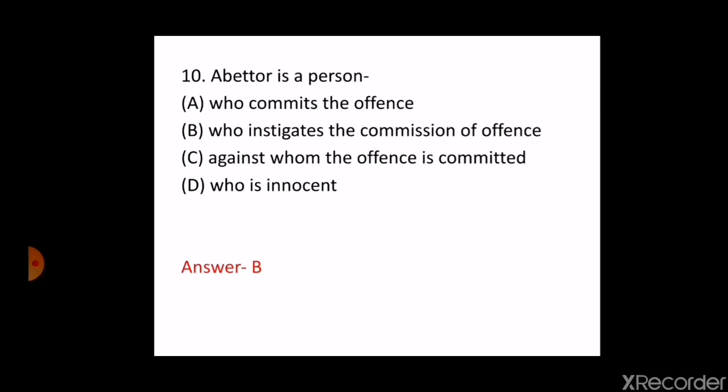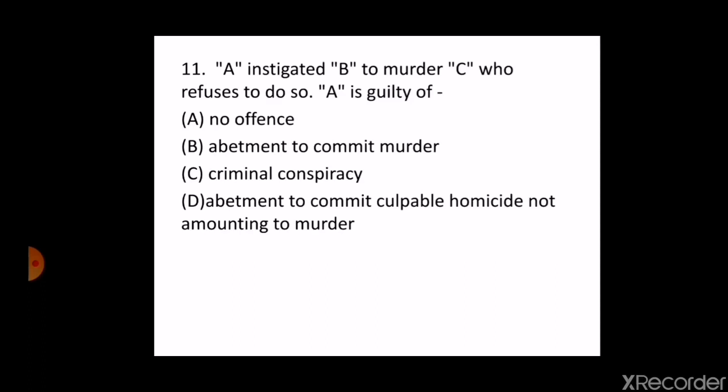The next question is: A instigated B to murder C, who refuses to do so. A is guilty of — A. No offence, B. Abatment to commit murder, C. Criminal conspiracy, D. Abatment to commit culpable homicide not amounting to murder. The correct answer is B — abatment to commit murder. This question is based on illustration A of section 108 of IPC.